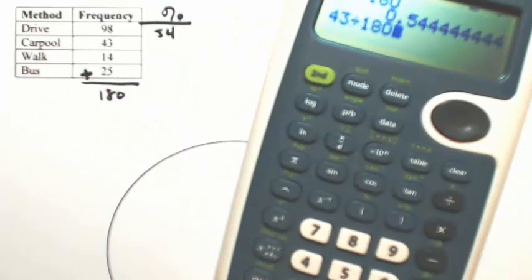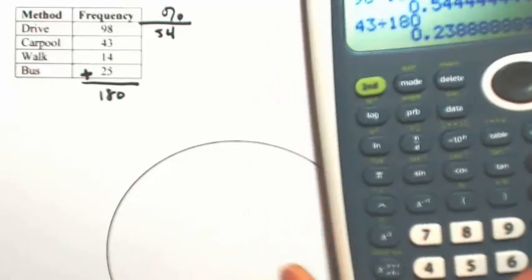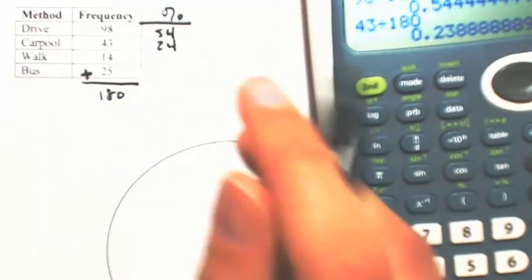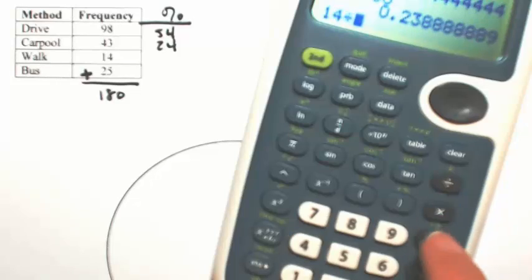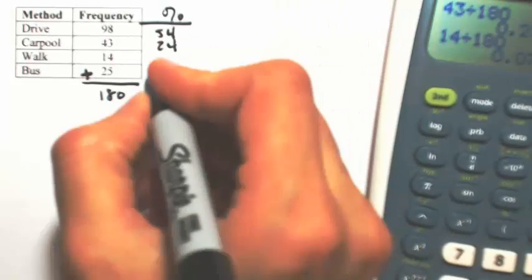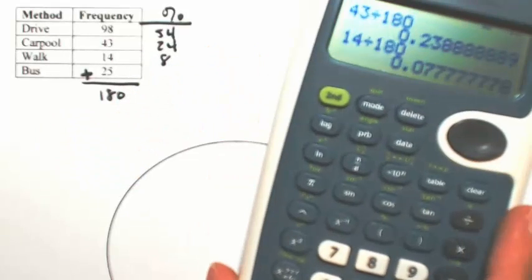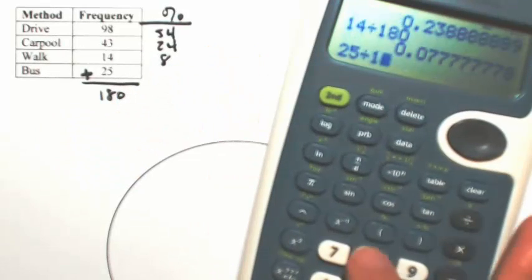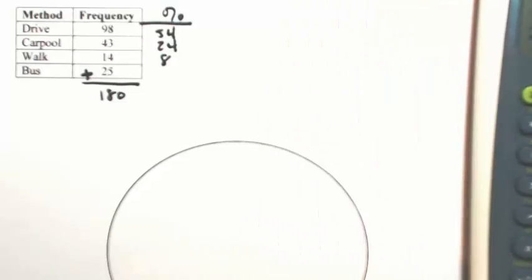43 divided by 180 is about 24%. 14 divided by 180 is about, let's say maybe 8%. And then 25 divided by 180 is about 14%.